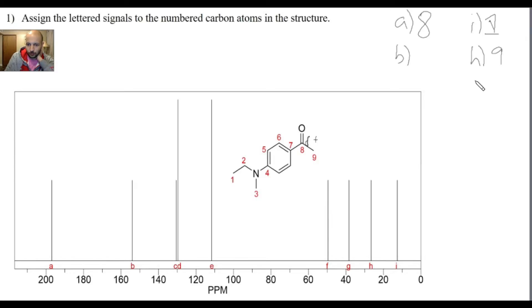Now, for peak G, I would go to carbon 1, or sorry, carbon 2, or F, that's F. G is 3. Sorry, I'm still getting used to this. Let me erase this. For peak G, I would go with carbon number 3, because that's the only CH3 left. So that's peak G.